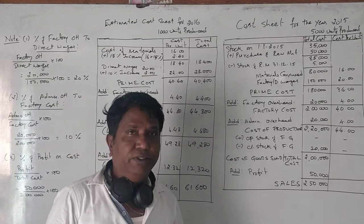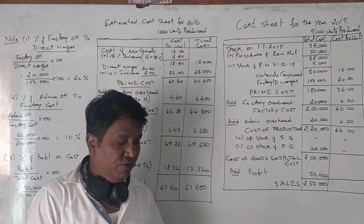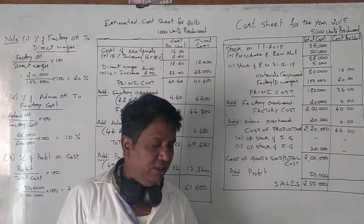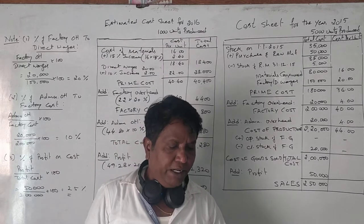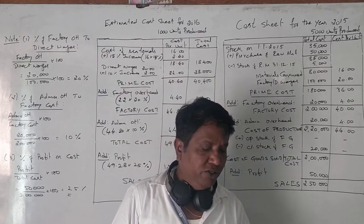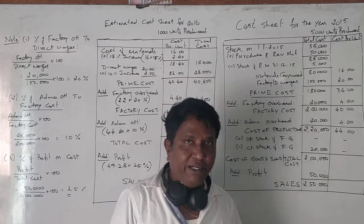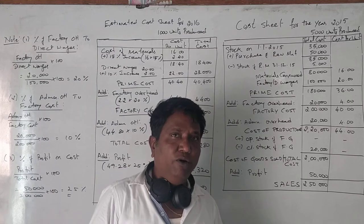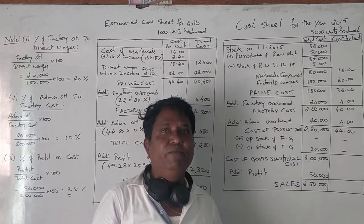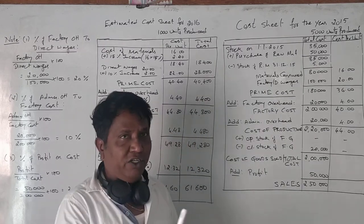This is a 2017 question paper for Bengal University Central. We need to prepare two statements: a cost statement or cost sheet for the year 2015, and an estimated cost sheet for 2016. So for two years we have to prepare these cost sheets.